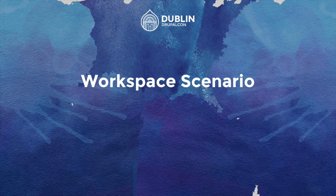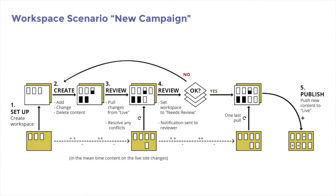We also looked at a scenario showing how workspaces actually work in real life. The yellow workspace is live, we create a white branch above it, then create content — the black and white boxes within the white workspace represent creations, changes, and deletions. You can update from live at any point, and workspaces can go through a full moderation process: needs review, published, and custom moderation states.